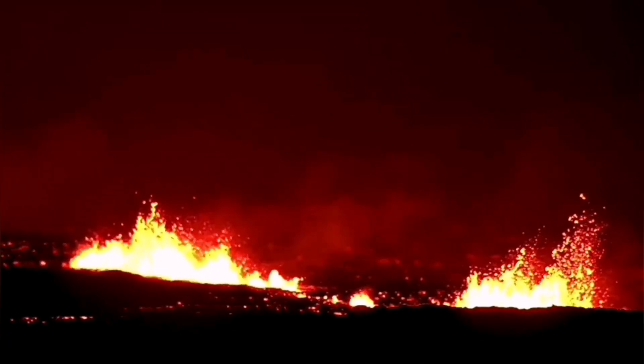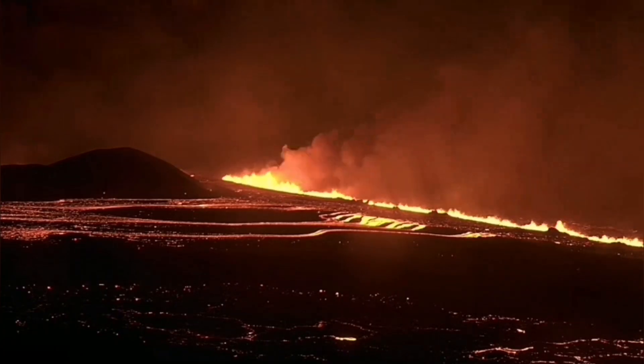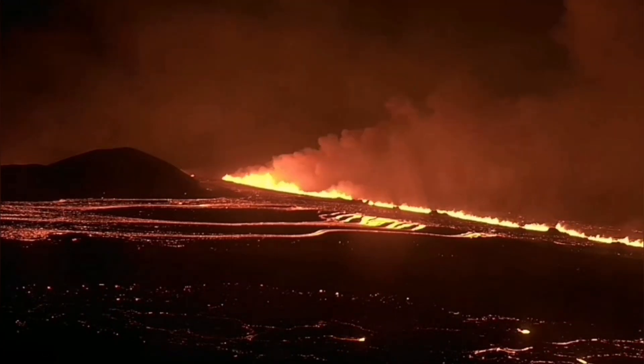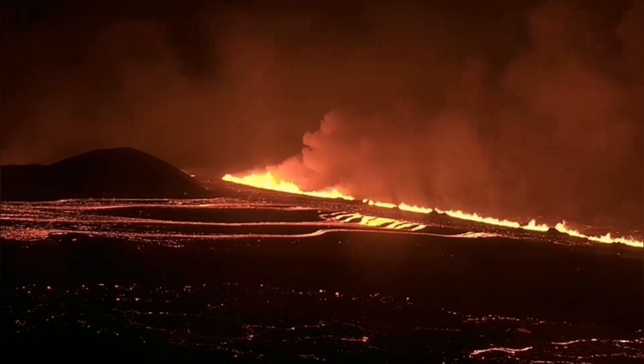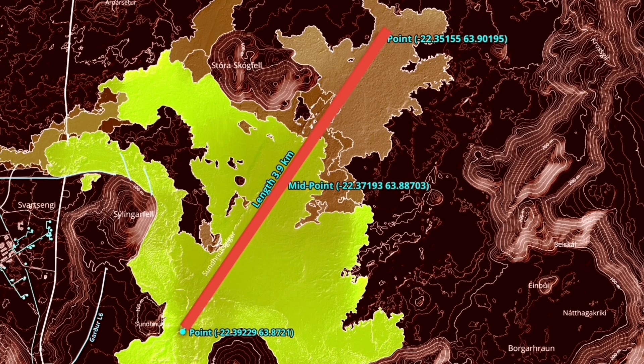Within the next hour, the fissure opened up to 3.9 kilometers — almost 4 kilometers — and the lava started to flow toward the lowland, toward the Schwarzsenge. You can see the change in slope here, and it has now almost reached the road to Grindelbeck, which is the road to the north of the Schwarzsenge geothermal power plant. The arrow shows the direction of movement and it may cut the road at any moment.